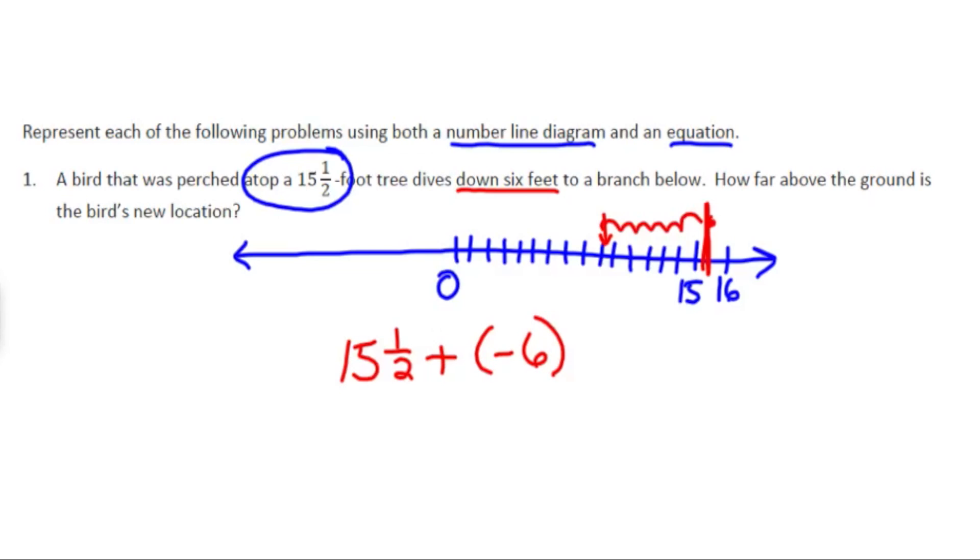That's one way of starting the equation. Or instead of adding a negative, adding a negative is the same as subtracting. So we can either write 15 and a half plus negative six or 15 and a half take away six. In either case, where he's left is at the number nine and a half.